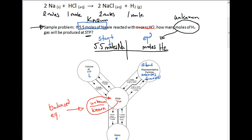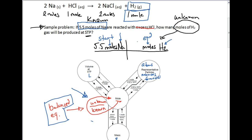We start at moles and end at moles. Since this is sodium and hydrogen — different substances — anytime we start at one substance and end at a different substance, we go around the unknown over the known for the balanced equation using the mole ratio. The numbers come from the coefficients of our balanced equation. For H₂, I look up in the balanced equation: the coefficient is 1, so I put 1 on top.